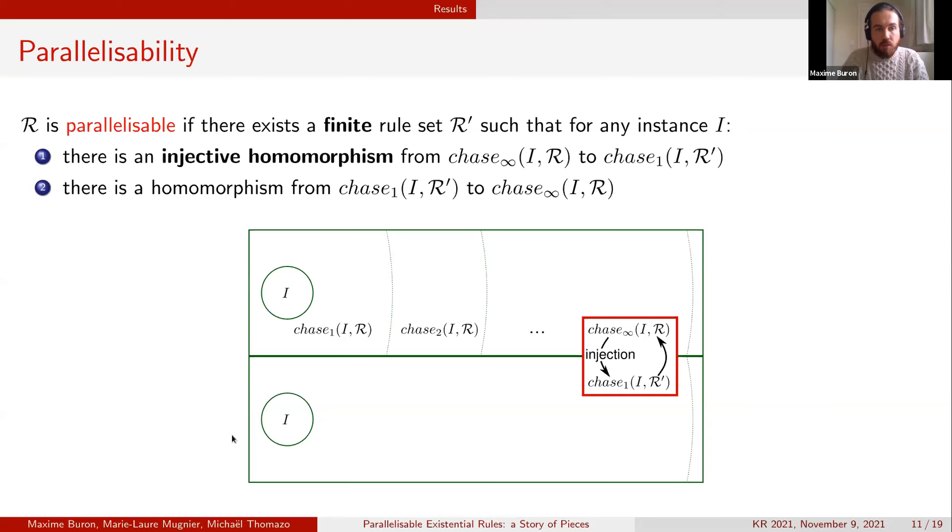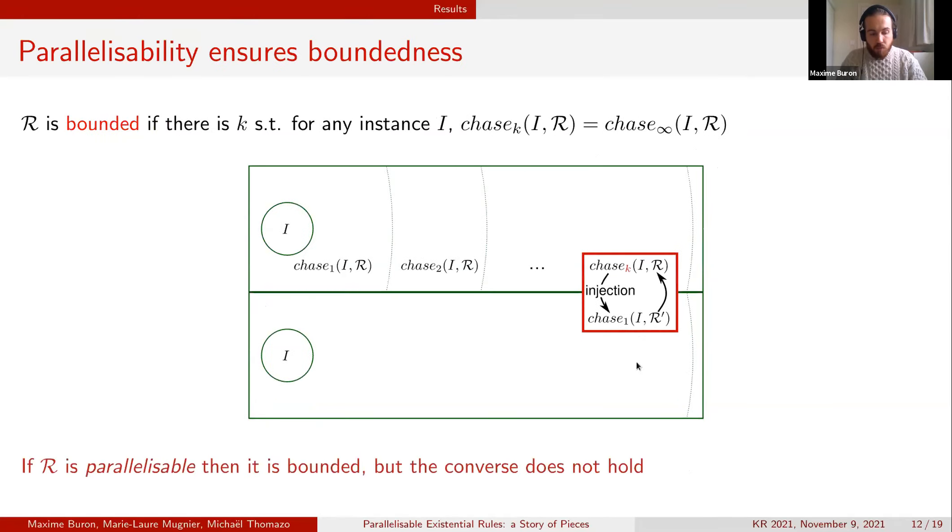More formally, we say that R is parallelisable if there exists a finite set of rules independent from any instances able to produce an equivalent superset of the chase in a single breadth-first step. That's the reason why here we have an injection.